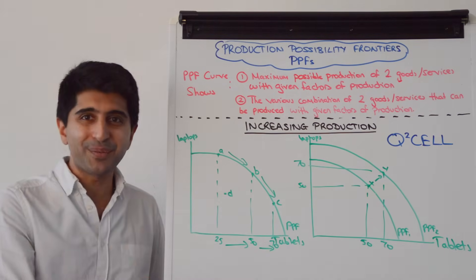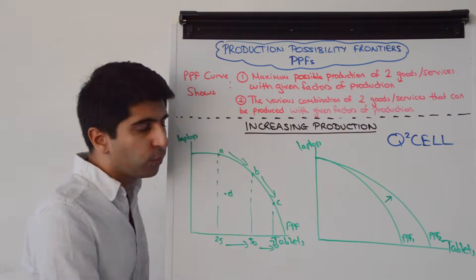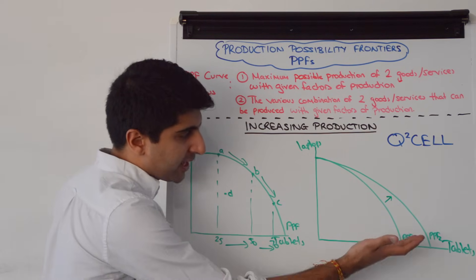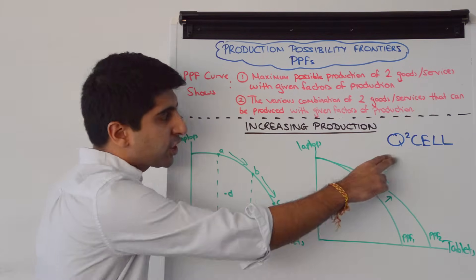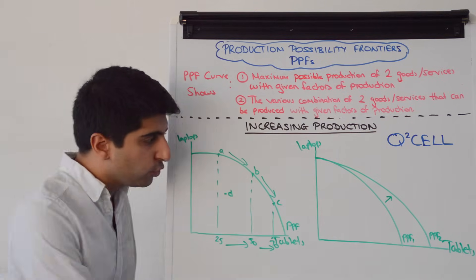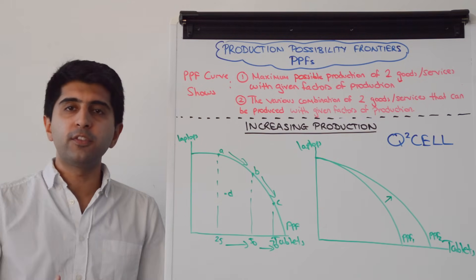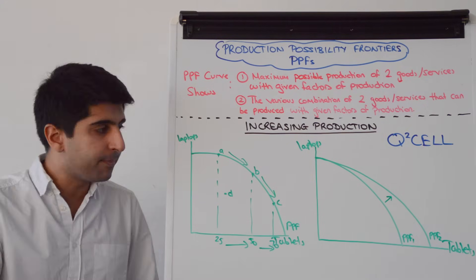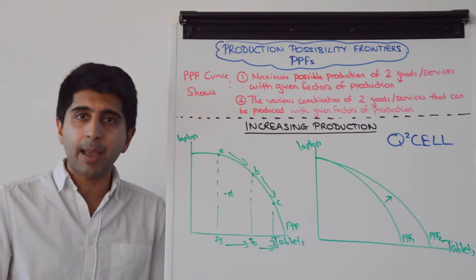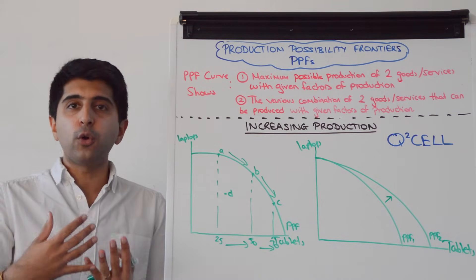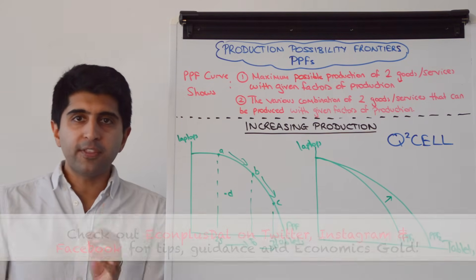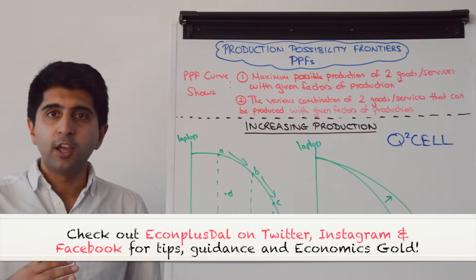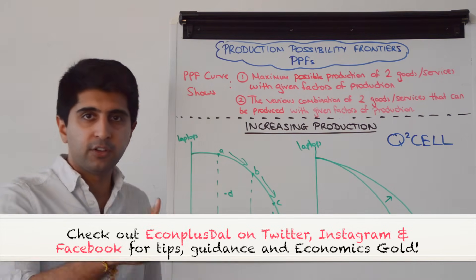The curve doesn't just have to shift outward in a parallel way. It is possible for a PPF curve to shift favouring only one of the goods — for example, favouring the production of tablets but not laptops. This happens when there is a change in the quantity and/or quality of factors of production that purely suit the production of tablets: workers who can only produce tablets, training in tablet production only, or machinery that can only produce tablets. So a non-parallel shift favours the production of one good over the other.